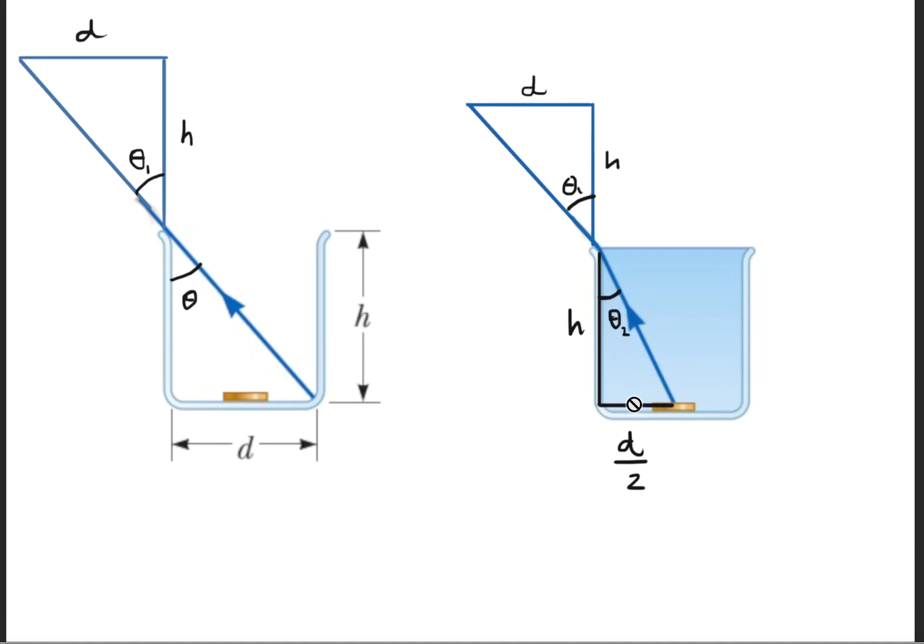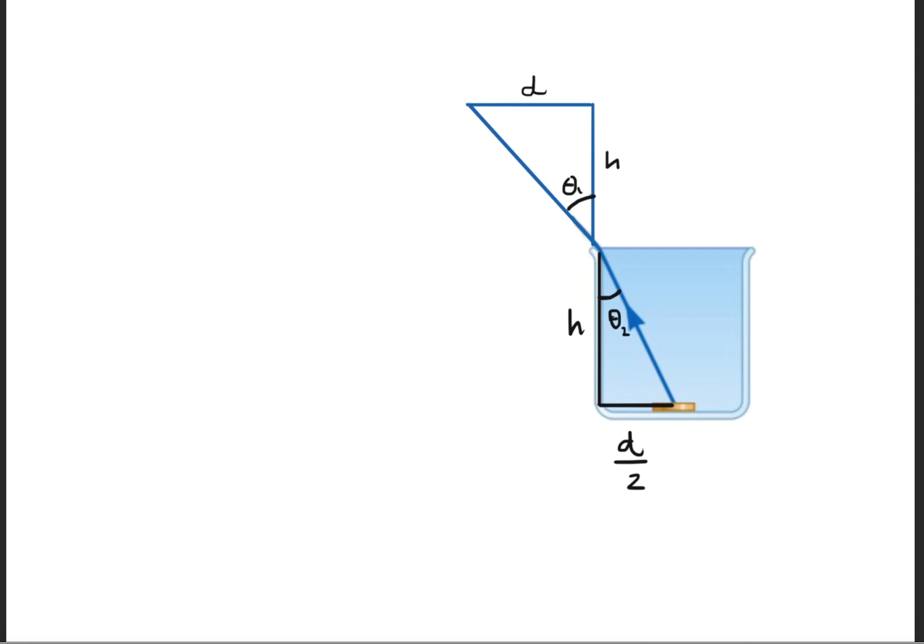Over here in this triangle down below, we can go ahead and find that the height is h, and the distance here is simply going to be half of the distance right here. The next thing we're going to need to do is find the hypotenuse of each triangle that we've drawn. So the hypotenuse for this upper triangle will be the square root of d squared plus h squared. Hypotenuse for this smaller triangle will be d over 2 squared plus h squared.